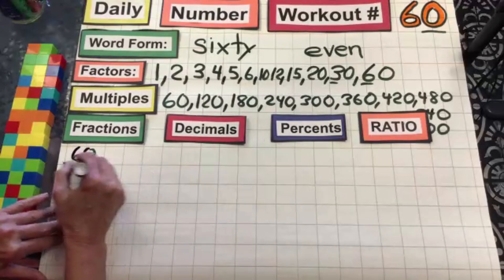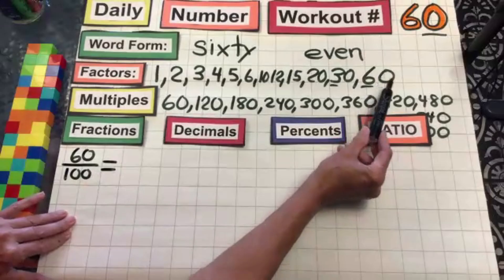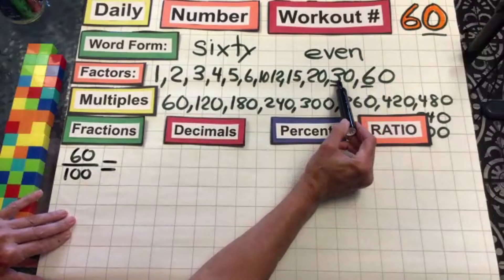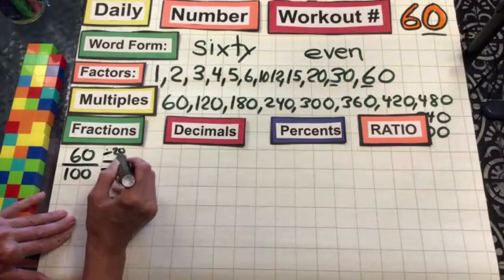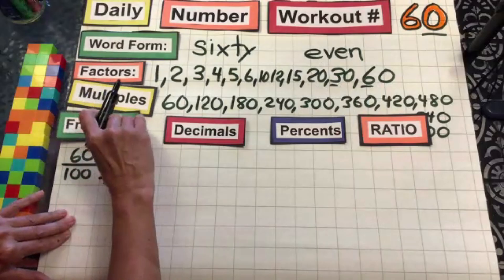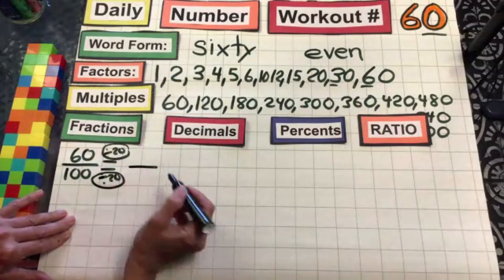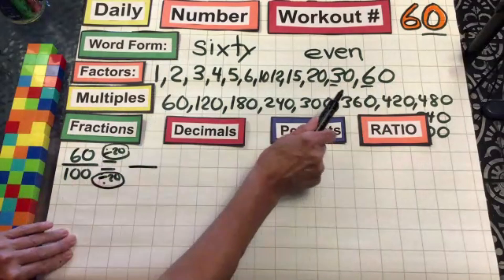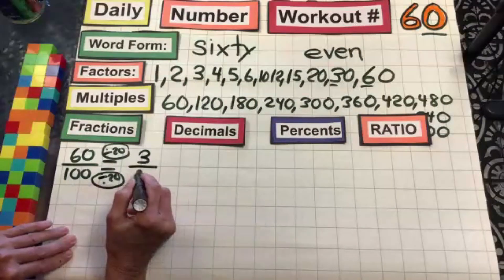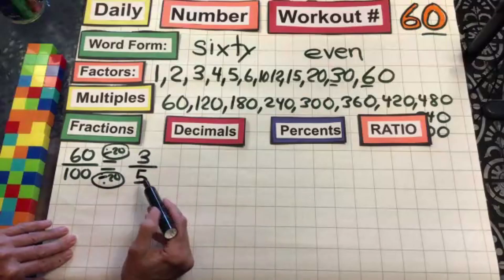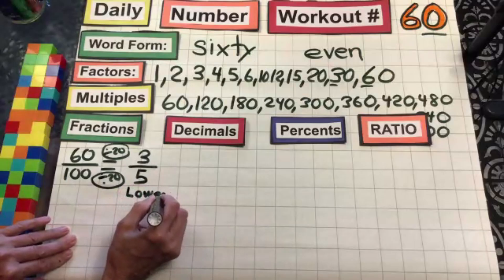So we have 60 over 100. If we look at our factors, 60 does not go into 100 evenly. 30 doesn't either, but 20 does. So we're going to divide the top and bottom number by 20 — the greatest common factor. We'll get our lowest term fraction. 20 goes into 60 three times, and 20 goes into 100 five times, so our lowest term fraction is three fifths.